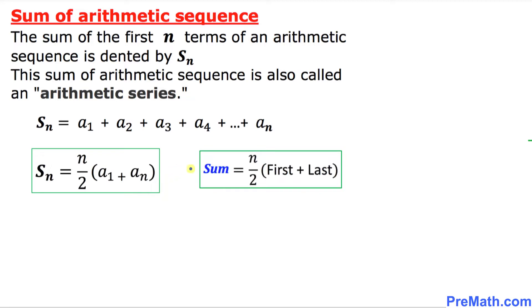This formula could also be written as sum equals n over 2 times the first term plus the last term.